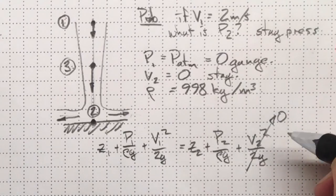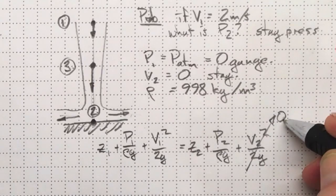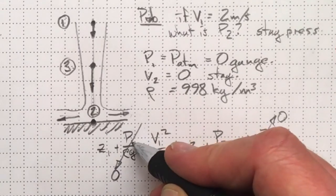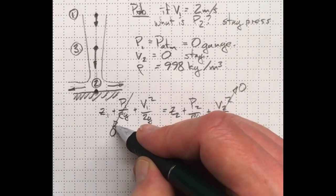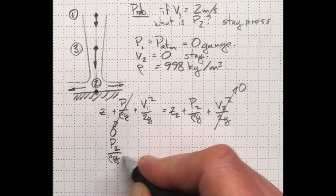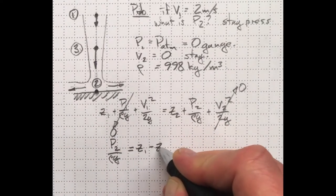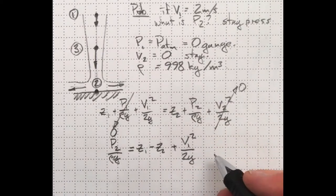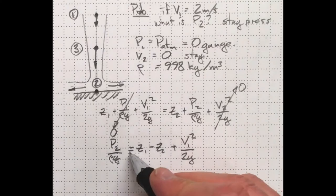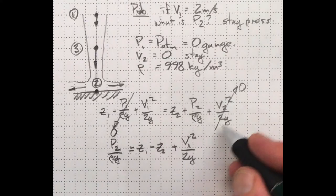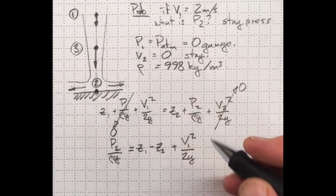So there's Bernoulli's equation written between points one and two. We know that the velocity at two is zero, so we can cancel out that term. We know that the pressure at one is atmospheric or zero gauge, so we can cancel out that term. Rearranging, we can get the pressure at two equal to the difference in elevation, z1 minus z2, so the difference in height between those two locations, and the element from the kinetic energy at location one.